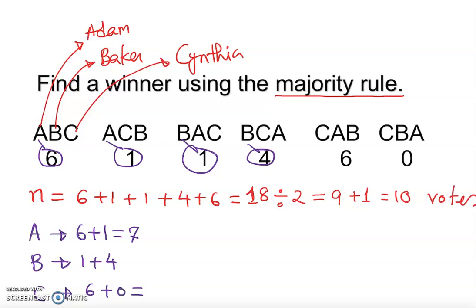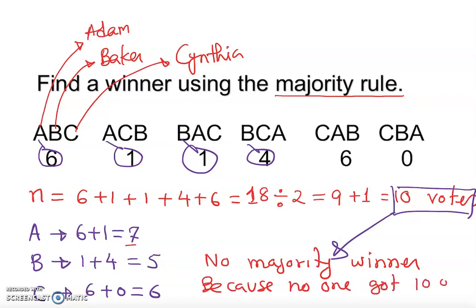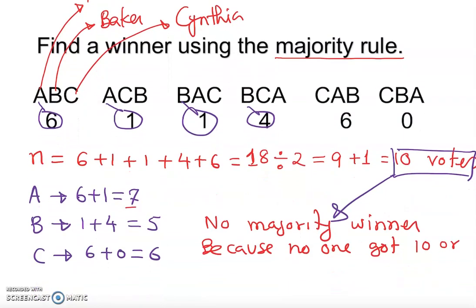We are looking for 10 votes, but no one received 10 votes. Adam got 7, Baker got 5, Cynthia got 6 — so there is no majority winner, because no one got 10 or more votes, meaning no one got more than 50%.